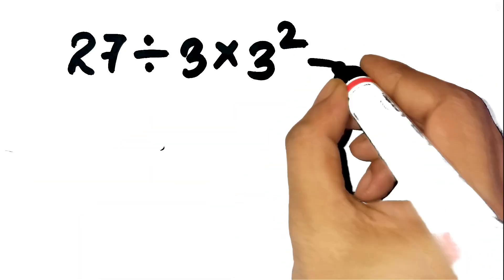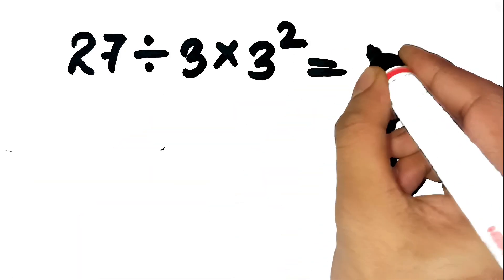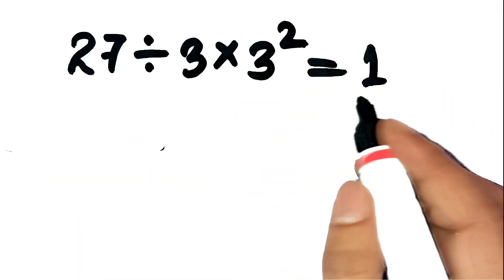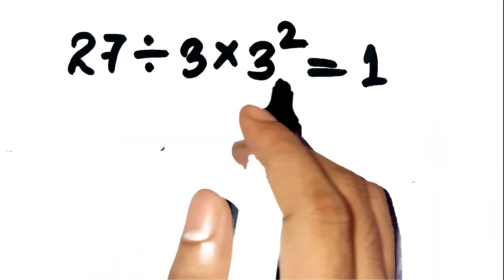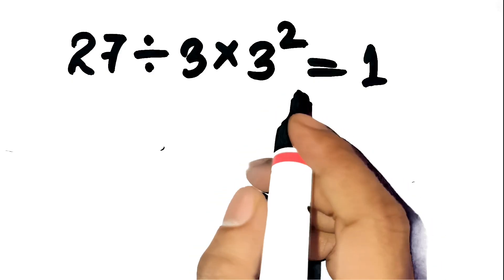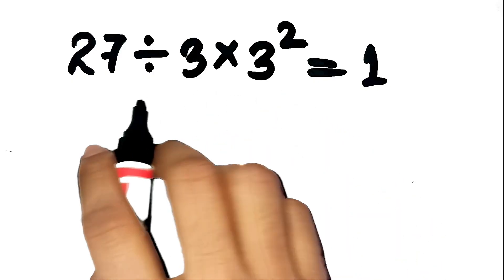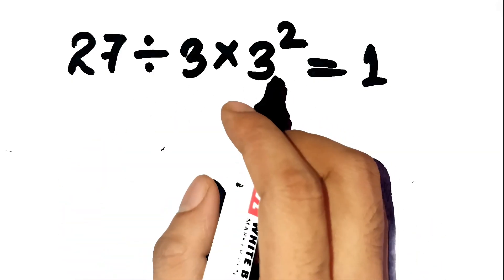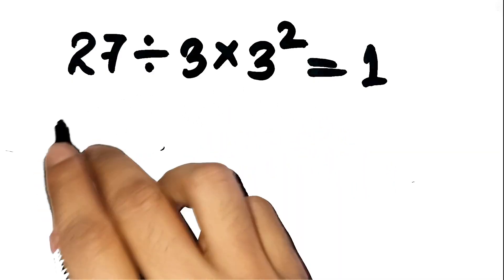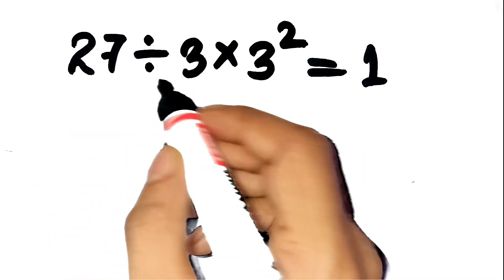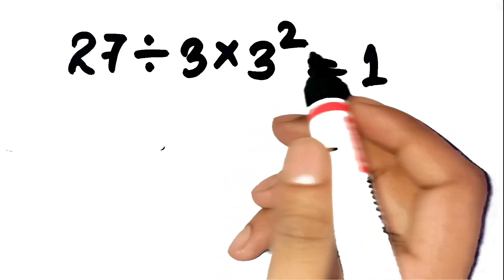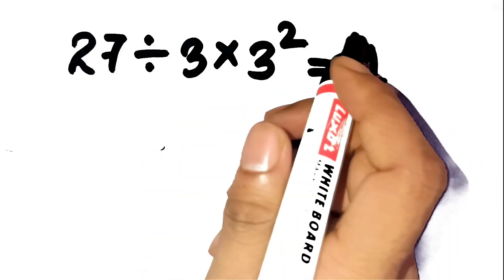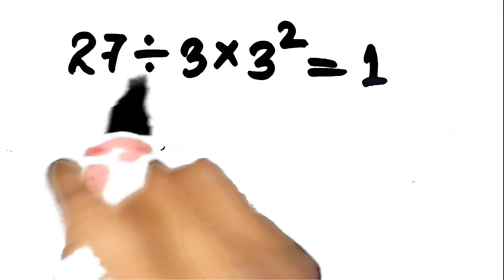Your gut says the answer is 1, but your brain's about to be corrected. And honestly, I don't blame you. This expression — 27 divided by 3 times 3 squared — looks super friendly at first.